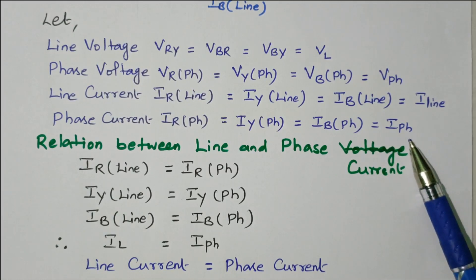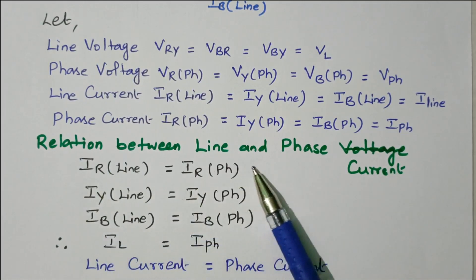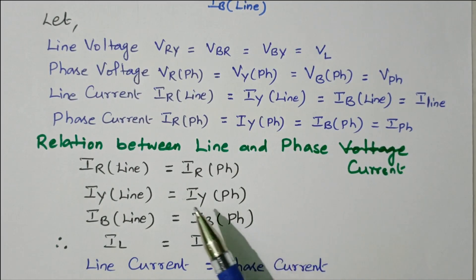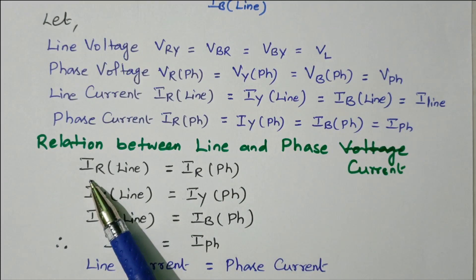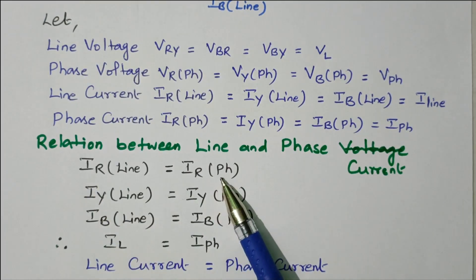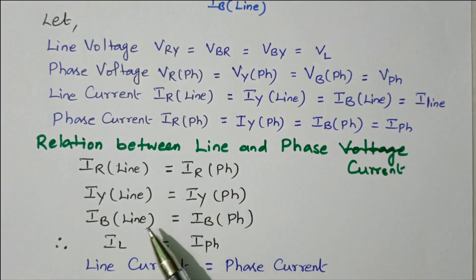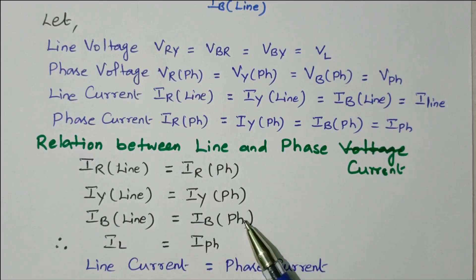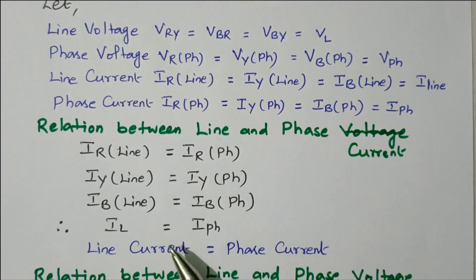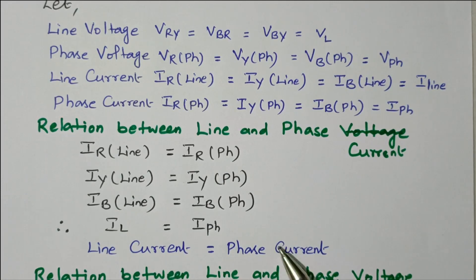With this assumption, we will go to the relation between line and phase current. We already discussed that the currents are equal — line current equals phase current. The line current of R phase equals the phase current of R phase; both are equal. Similarly for Y phase and B phase: line current equals phase current. So generally we can write I_L equal to I_phase.